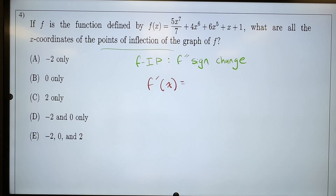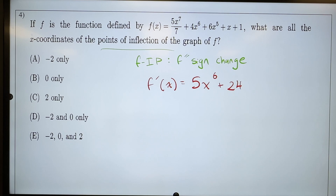Let's go ahead and find f prime first, and take the derivative of that to find f double prime. For f prime: the 7 is going to come down and cancel out, meaning I'm left with 5x to the power of 6. Next, 6 times 4 is 24, x to the power of 5. Plus 6 and 5 multiplied is 30, x goes down to the power of 4, plus 1. That was f prime.